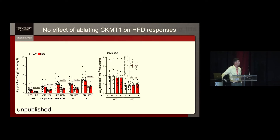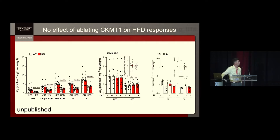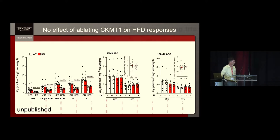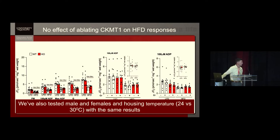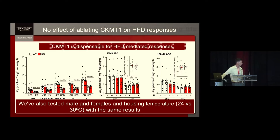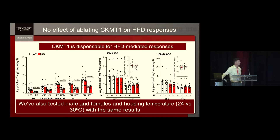When we go to our with and without creatine experiment again, the inset shows the delta change with creatine — there was no effect regardless of genotype, in both the inguinal and gonadal fat depots. We've tested male and females, housing temperature between 24 and 37 degrees Celsius, and different time points between CL, and we always get the same results. So despite the fact that we can detect CKMT1 mRNA and protein in human visceral depot, it doesn't seem to affect the development of high-fat diet-induced insulin resistance. It seems to be dispensable.